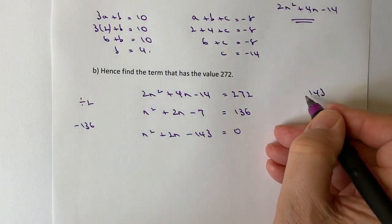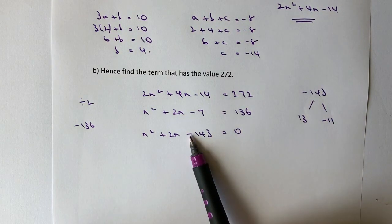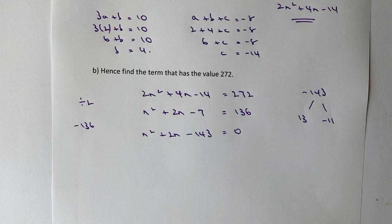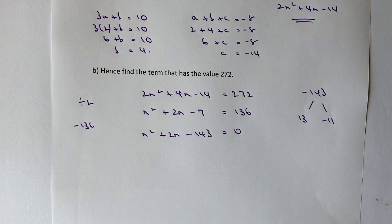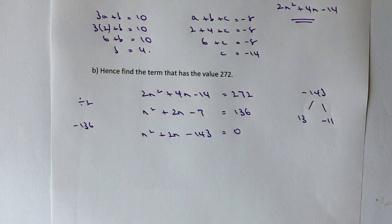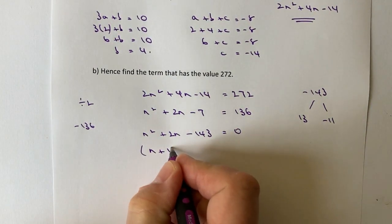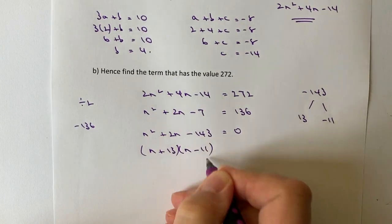Now what I do need from that is two numbers that when I multiply them together make 143, and when I add them together make positive 2. Well, the two numbers—it's actually minus—are going to be 13 and minus 11. Sorry, it's minus 143. So 13 and minus 11, because when I multiply those two together, I get minus 143, and when I add them together, I'm going to get positive 2. This allows me to write this as n plus 13 multiplied by n minus 11 equals 0.